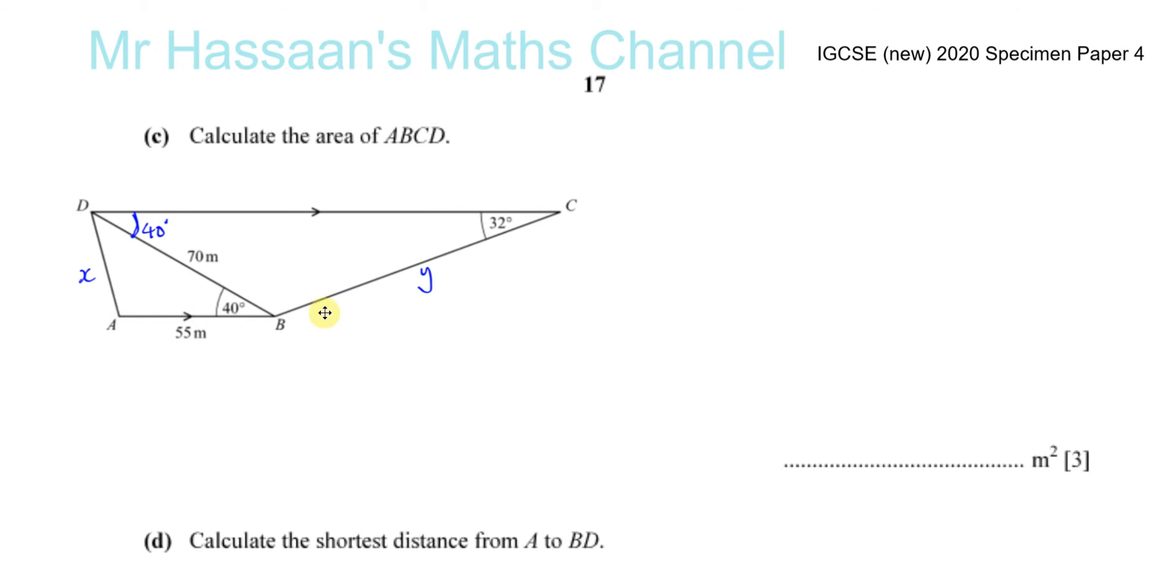Part C says calculate the area of ABCD. You've got to calculate the area of the whole of the shape, ABCD. Now this shape is a trapezium. To find the area of a trapezium, you need the vertical height, which I guess you could find if you wanted to. But the easiest way of dealing with this particular problem is to find the area of this triangle and find the area of this triangle. And to find the area of a triangle when it's not a right angle triangle, we have a formula. The area equals a half times AB sine C, where it's kind of like the cosine rule in terms of its concept. You have two sides and the angle between those two sides. For triangle 1 here, I'll do a half times 70 times 55 times the sine of 40.